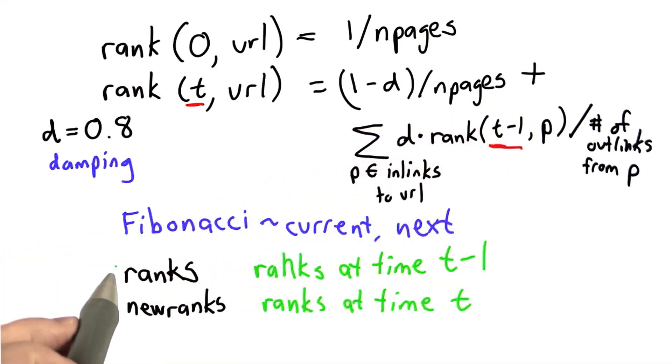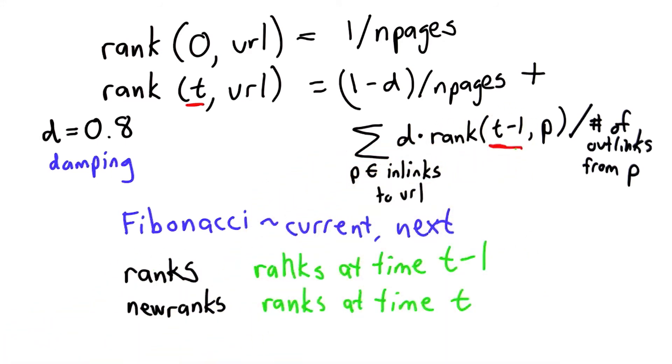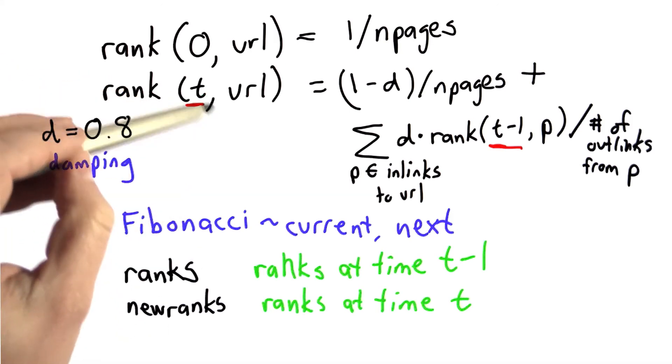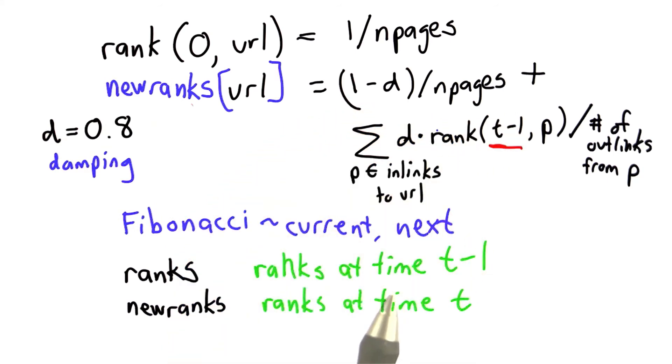That's why we need to keep track of both the previous values, which will be used for ranks t minus 1, and the new ranks. Once we've done that, we don't need the t parameter anymore. What we're going to do is change this rank. The rank at time t is going to be the value of newrank, and the value of rank at time t minus 1, that's the value of ranks.